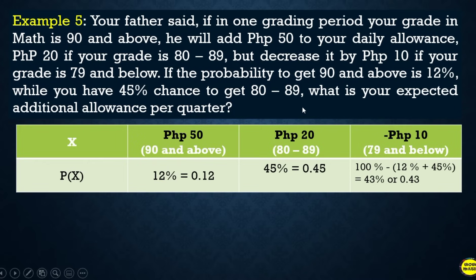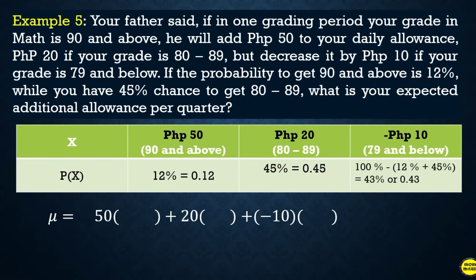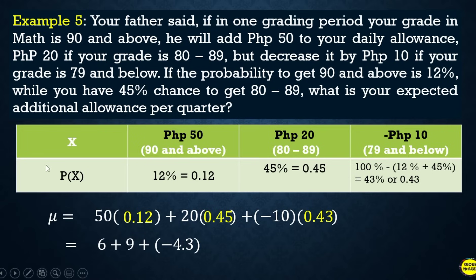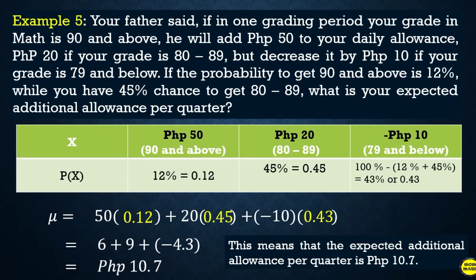Now we can compute the expected additional allowance per quarter: 50 times 0.12, plus 20 times 0.45, plus negative 10 times 0.43. That is 6, plus 9, plus negative 4.3. Simplifying, the answer is 10.7, or 10 pesos and 7 centavos. This means that the expected additional allowance per quarter is 10 pesos and 7 centavos.